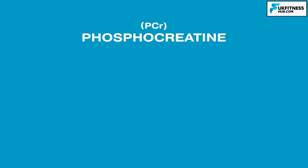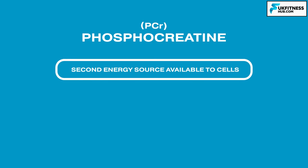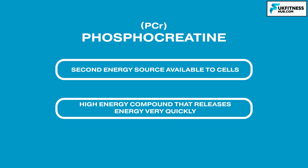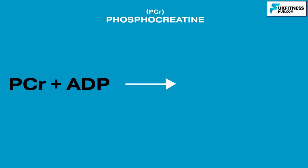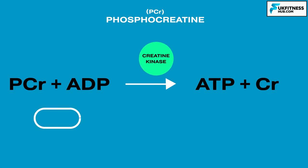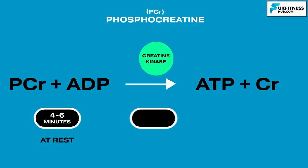Next up, we have PCR, known as phosphocreatine. PCR is a second energy source available to cells, and it is another high-energy compound that releases energy very quickly and can produce both energy and free phosphates to re-synthesize ATP. PCR consists of a phosphate molecule and a creatine molecule attached by a high-energy bond, and this bond is broken to liberate energy by a reaction catalyzed by an enzyme called creatine kinase.